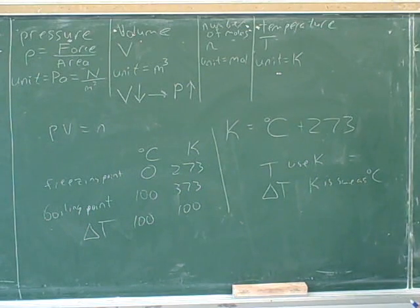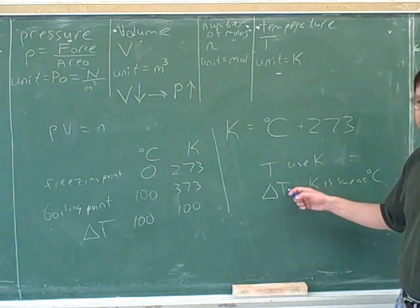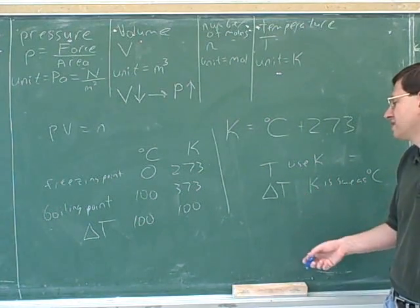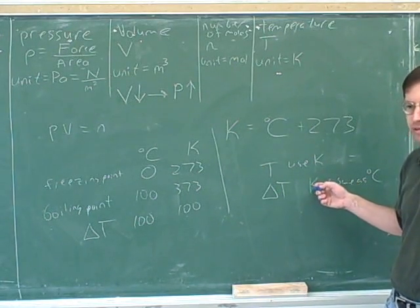So we're going to see a bunch of formulas now for the rest of the course. Some of them involve T and some involve delta T. Well, if they involve T, we've got to translate into Kelvins. But if they involve delta T, it doesn't make any difference, because it would be the same number either way.